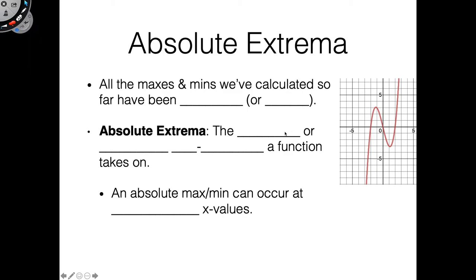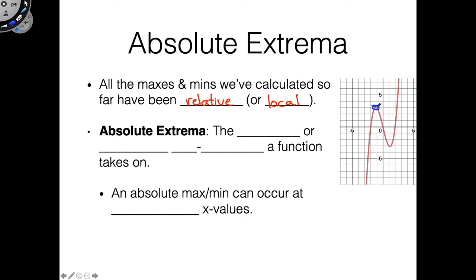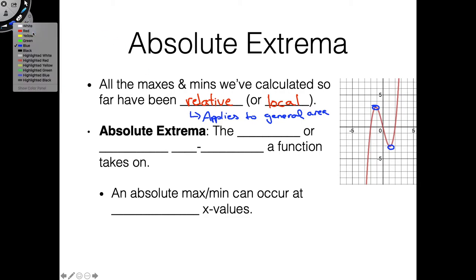Let's go over some terminology quickly. So far, all the maxes and mins we've been calculating have been what we call relative — another word thrown around is local; both are interchangeable. What this is saying is that the max on that graph may not be the biggest point everywhere, but it's still the biggest within a reasonable region. Same is true for the min — it's the smallest point given a general area. So the concept of a relative or local extreme value means it applies to a general area.